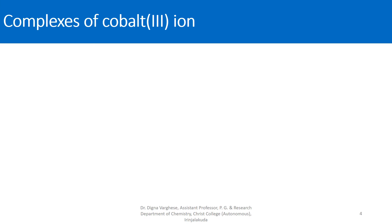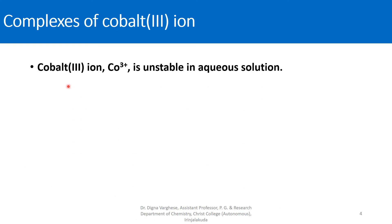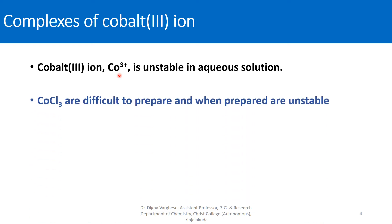The next unstable metal ion is cobalt(III) ion. Cobalt(III) ion, that is Co3+, is unstable in aqueous solution. CoCl3, in which cobalt is in the +3 oxidation state, is difficult to prepare, and when prepared it is unstable.